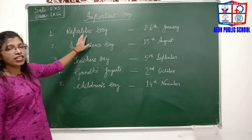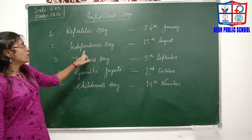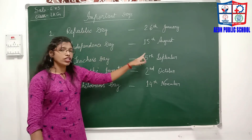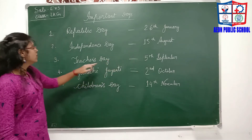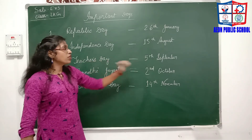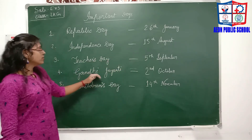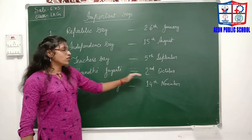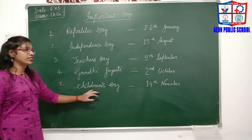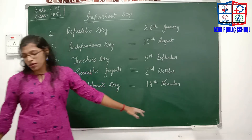So, Republic Day is celebrated on 26th January. Independence Day is celebrated on 15th August. Teacher's Day is celebrated on 5th September. Gandhi Jayanti is celebrated on 2nd October. And Children's Day is celebrated on 14th November.